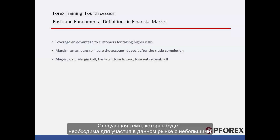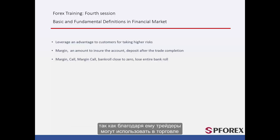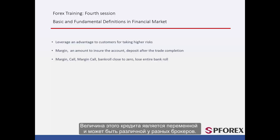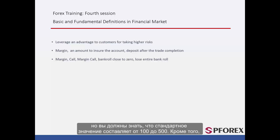The next thing which will allow smaller parties to participate in this market is leverage. This will also pose a risk for the party because they can loan several times more than their capital from their broker at the moment of trade. The quantity of this loan between brokers is variable. For instance, some brokers may even go up to 1,000 to 2,000 in leverage, but the standard is between 100 and 500. You should also consider that the higher the leverage, the higher the risk it holds.